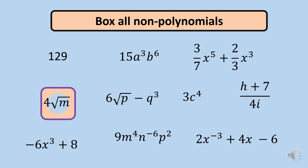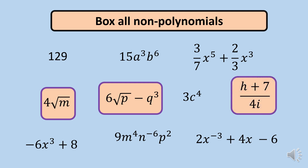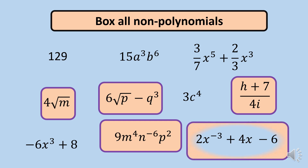The non-polynomials are: first, 4 square root of m — because the variable m is under a radical sign. Next, 6 square root of p minus q raised to 3 — variable is under a radical sign. Next, h plus 7 over 4i — the variable i is in the denominator. Next, 9m raised to 4, n raised to negative 6, p raised to 2 — not a polynomial because one of the exponents, negative 6, is a negative exponent. Lastly, 2x raised to negative 3 plus 4x minus 6 — one of the exponents is negative.